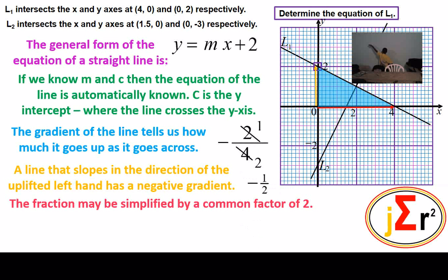The value of m is therefore negative one-half, and we will substitute that in the place of m. The equation of the straight line L1 is therefore y equals negative one-half x plus 2.